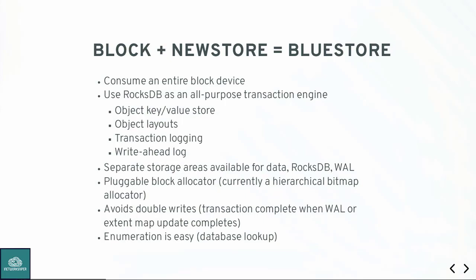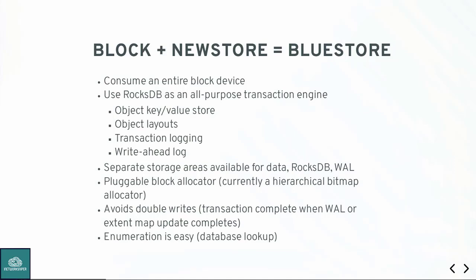We've been experimenting with different ways to more efficiently allocate disk space for objects. The very first allocator was actually named 'stupid allocator' — it's still in the code. Before we released, we switched to a hierarchical bitmap allocator, which is just a tree with a bit set based on the extents we allocate. And if we want to determine whether or not we have an object, we just look it up in the database and see if that key exists — much faster.